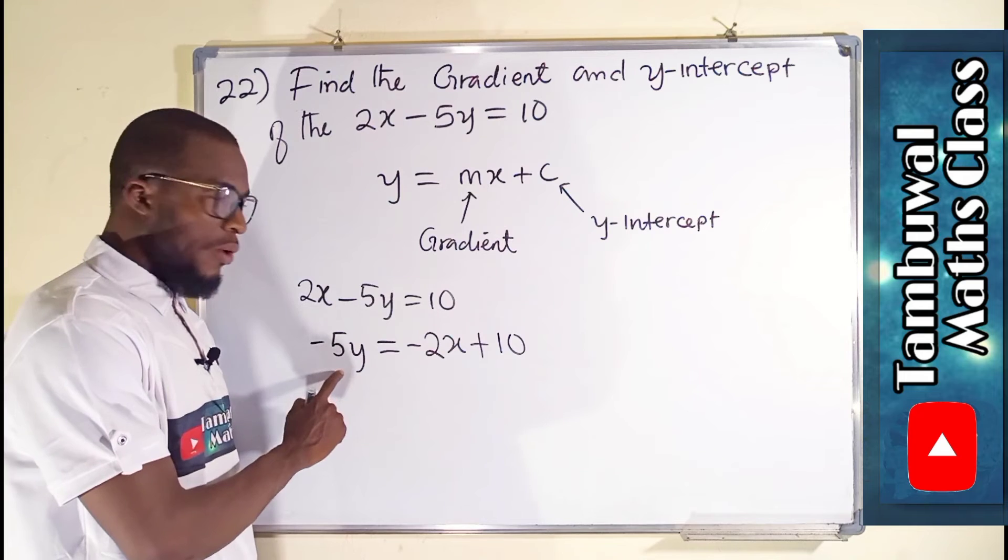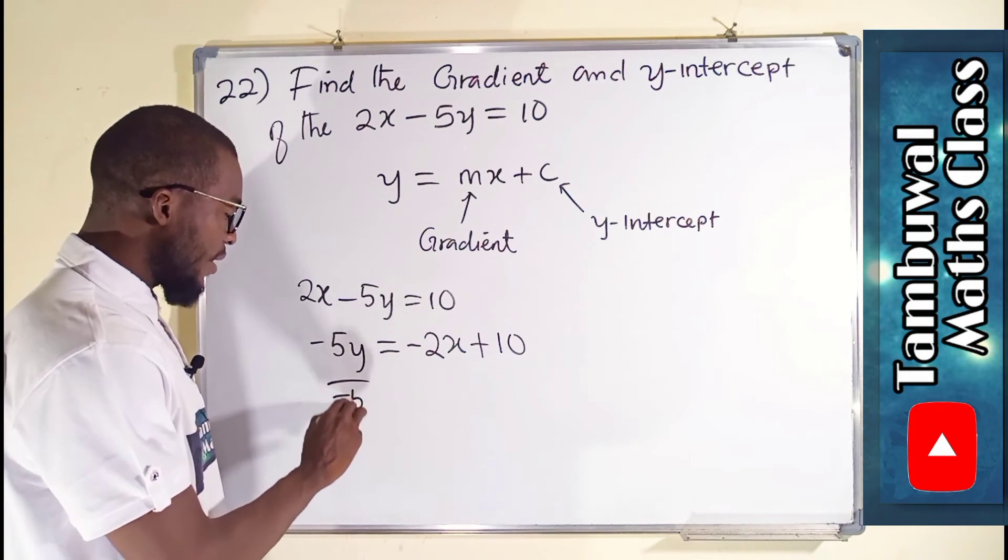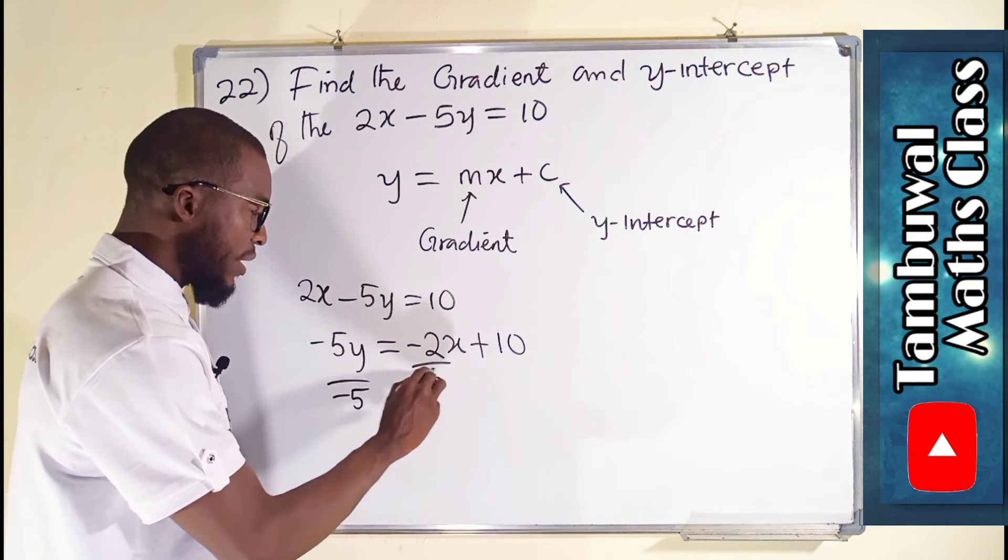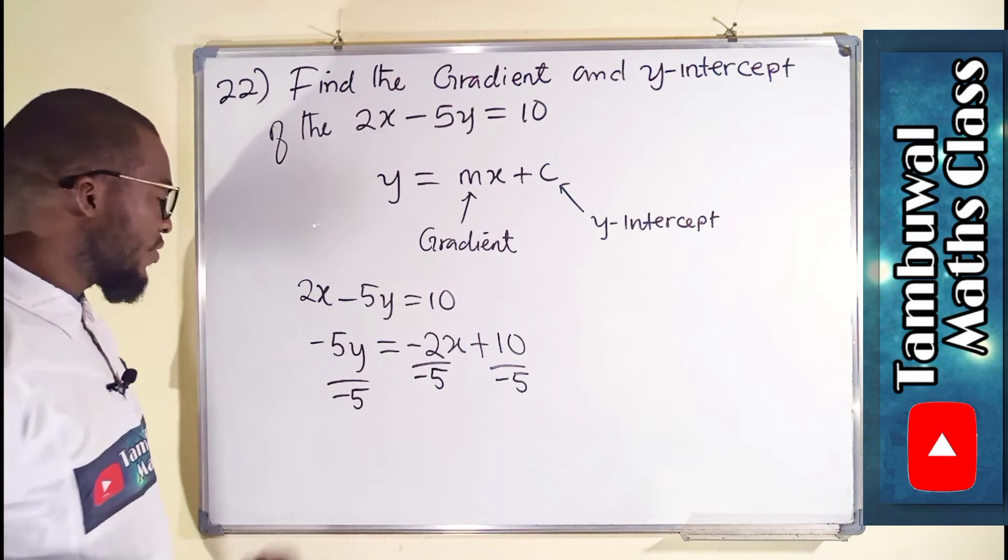We want to have y alone here, so we can divide each term by negative 5, negative 5, negative 5. Whatever you do here, you have to do it to the other side.